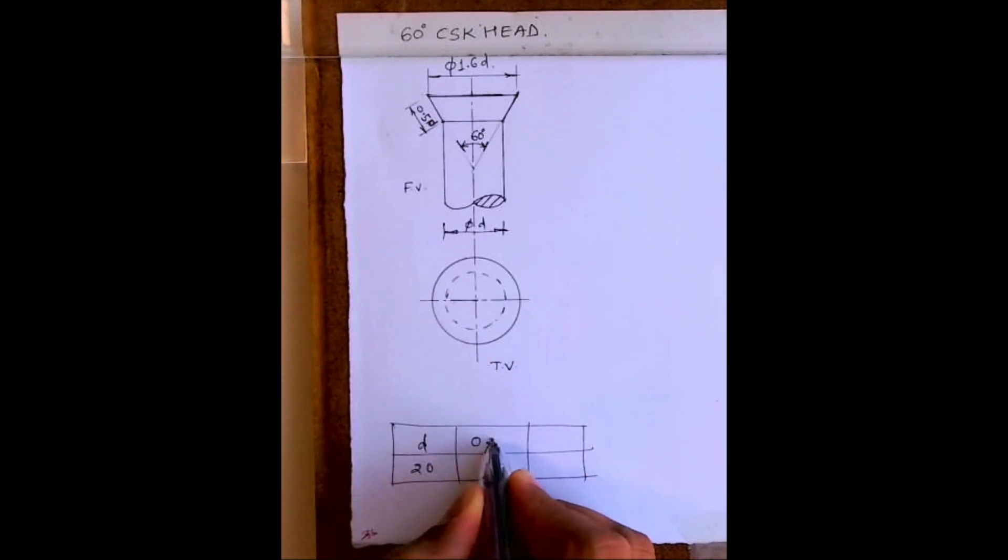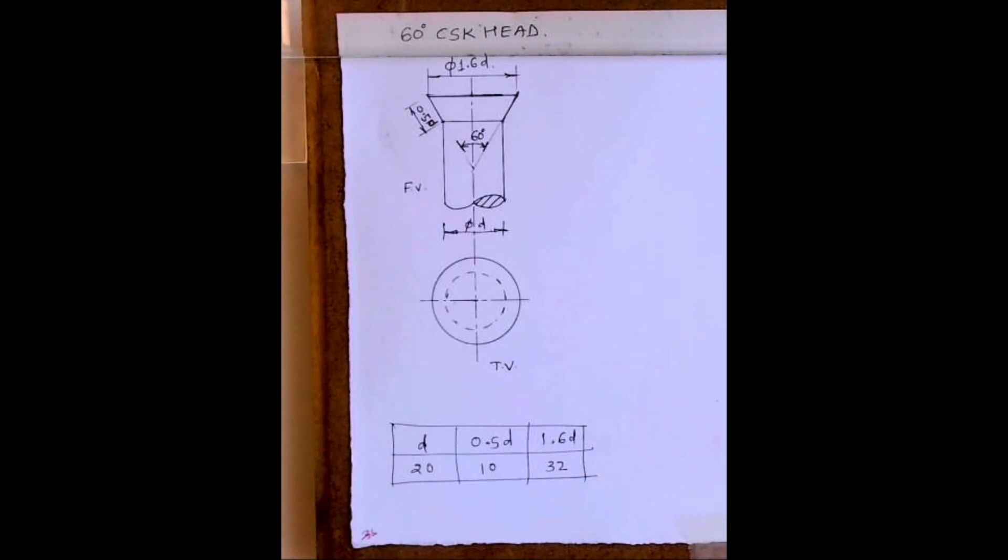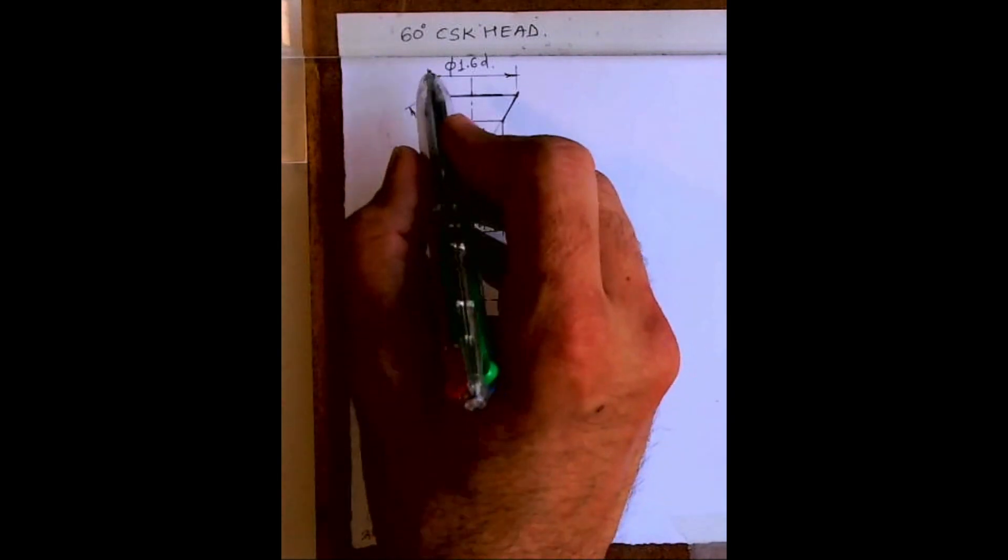Now we know d is 20, which will be given to you. 0.5d would be 10, and 1.6d would be 32.